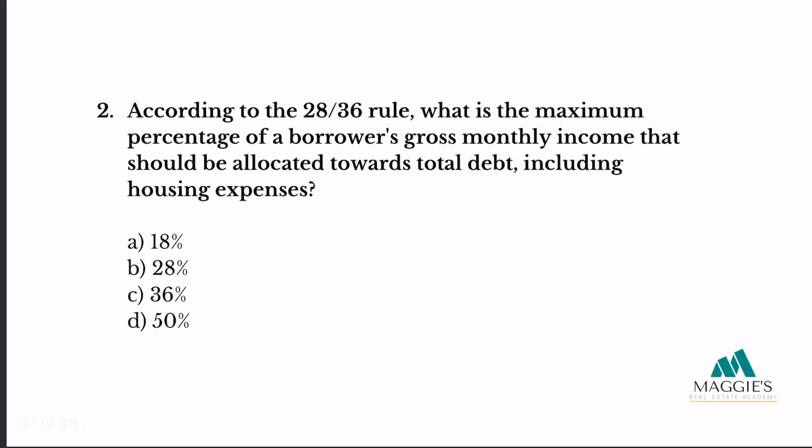Number two: according to the 28/36 rule, what is the maximum percentage of a borrower's gross monthly income that should be allocated towards total debt, including housing expenses? This problem says total debt including housing expenses, so that is going to be 36%.